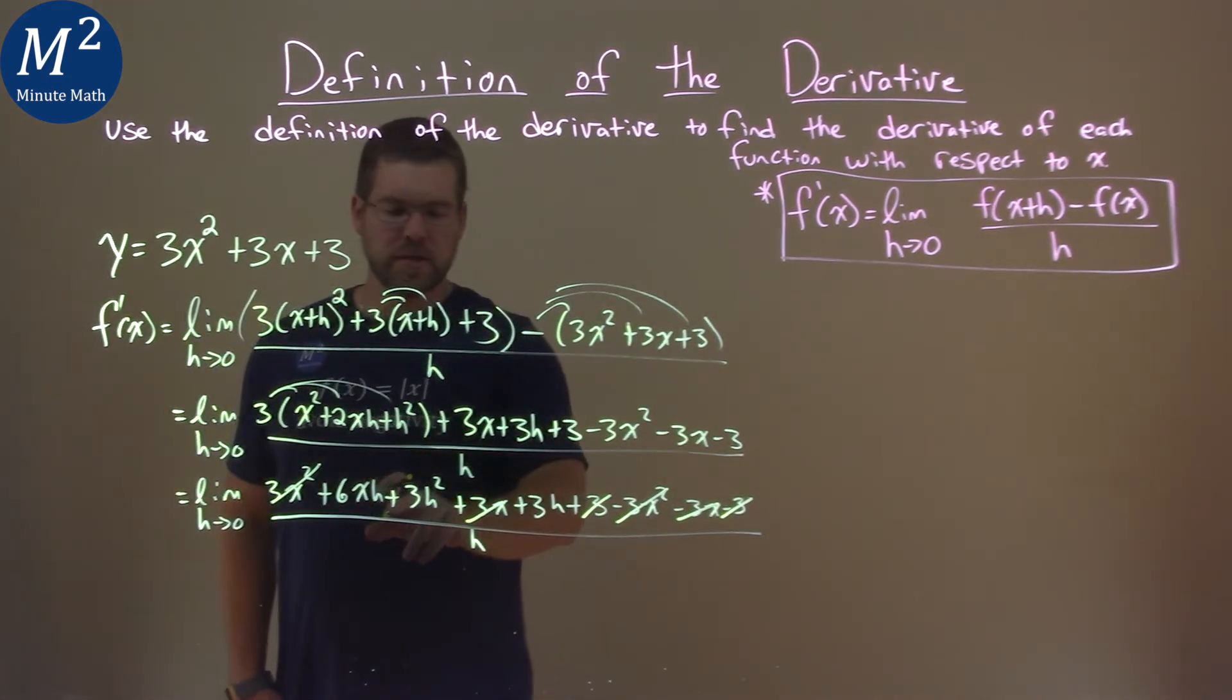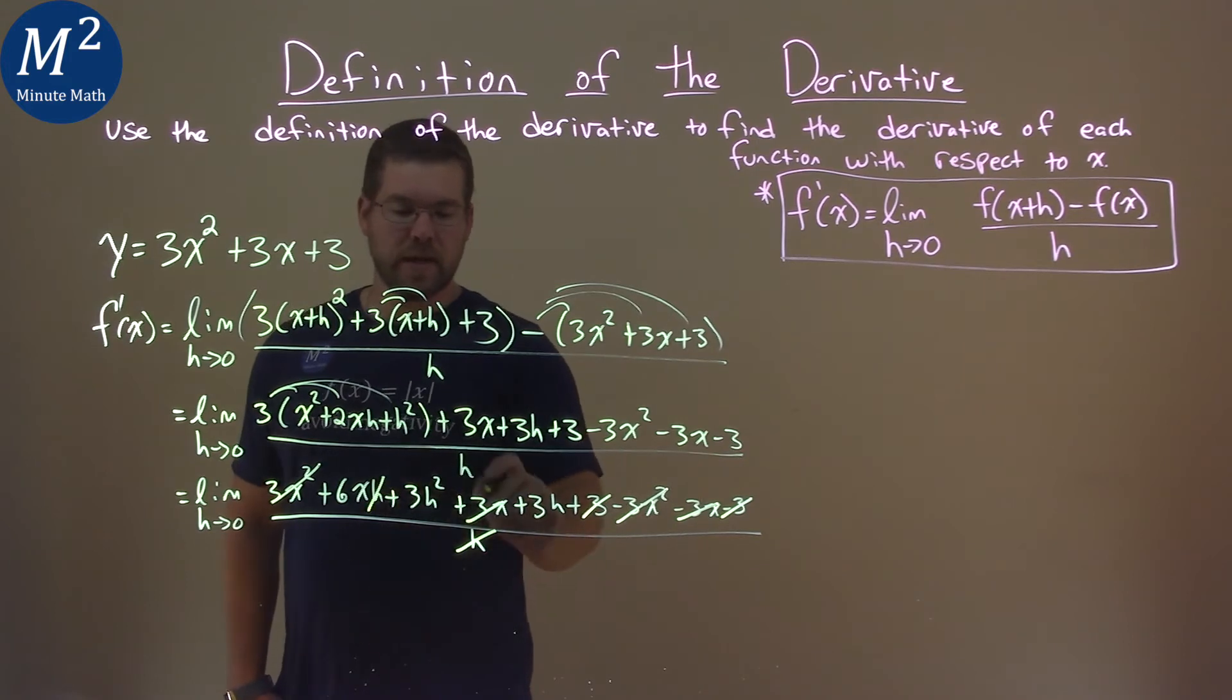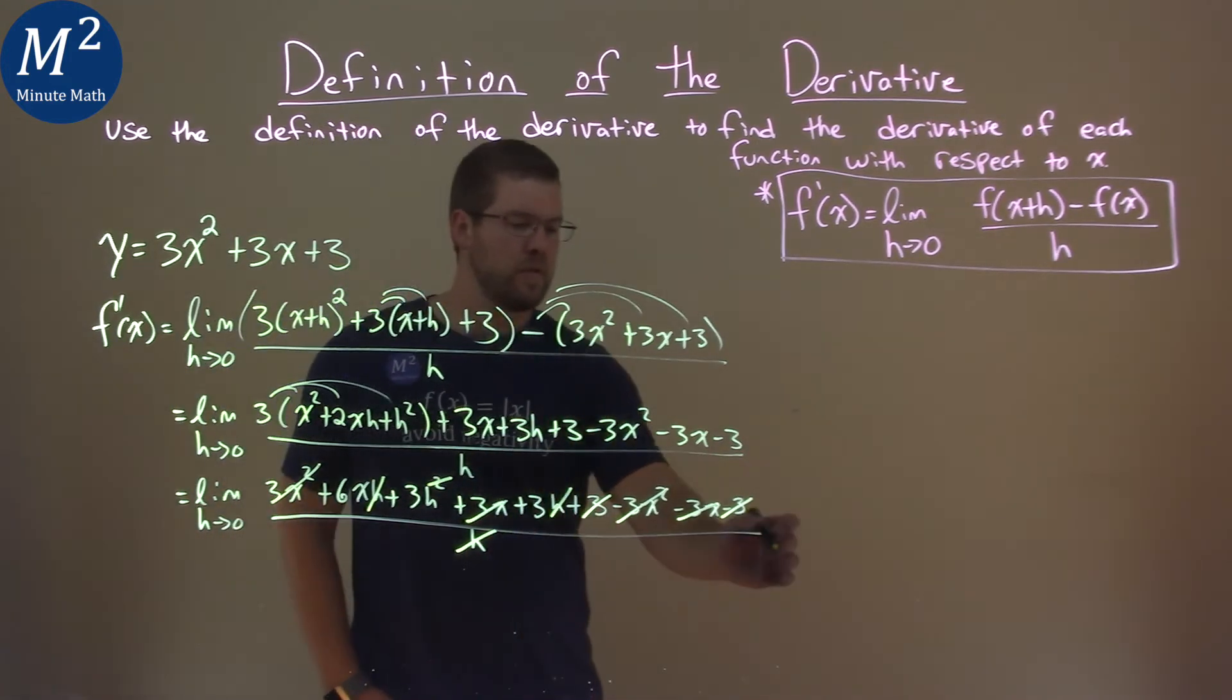Notice there's one h here, two h's, and one h in each one of the terms that's left over. h in the denominator. Let's cancel that out. h down here gets rid of this h, gets rid of this squared, gets rid of that h right there. So what are we left with here?